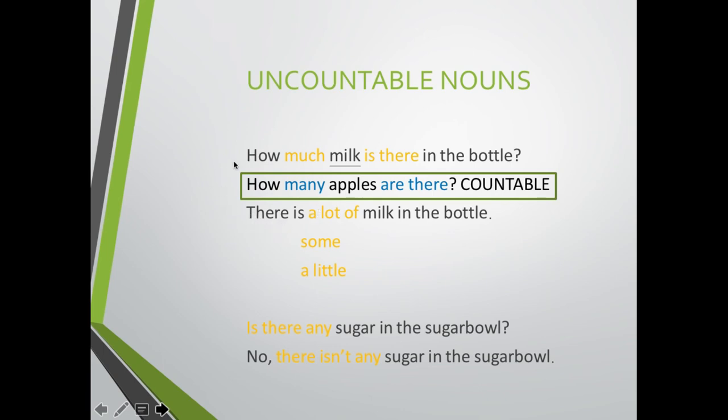Y la respuesta para lo que no podemos contar puede ser there is a lot of milk in the bottle. Mucha, a lot of, mucha leche en la botella. Some puede ser algo, algo de leche en la botella. A little, a little milk, un poco de leche en la botella. Cantidades que podemos decir para lo que no podemos contar, ok. Another question. Is there any sugar in the sugar bowl? Hay algo de azúcar en el azucarero. No there isn't any sugar in the sugar bowl. No hay en este caso azúcar en el azucarero. Seguimos acá con singular porque no lo podemos contar ya. Is there, there is.